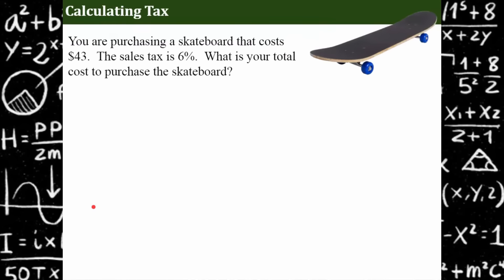So if you're a t-shirt store owner and you pay ten dollars for the t-shirts, you're not going to sell them to your customers for ten dollars because if you did that you wouldn't make any money. So you're going to have a percent of markup. I'm going to show you these four real world examples, and I hope you'll pause and try to solve them on your own and then come back and see my worked out example. All right, here we go. So we're going to be calculating tax. We're purchasing this skateboard and it costs $43. The sales tax that we're going to be charged when we go to check out is six percent. What is your total cost to purchase the skateboard?